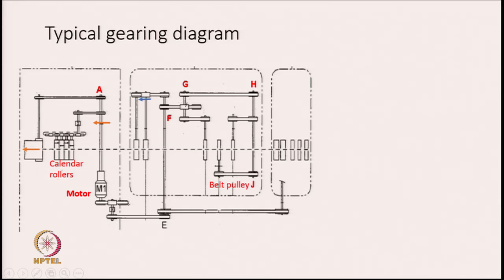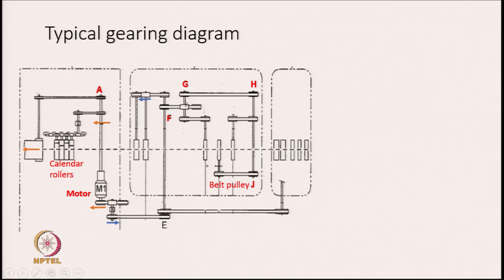From this side the motion is flowing. From here it goes there, going in this direction. As you see, from here the motion is distributed. By the time it goes to pulley F, part of it goes in the right-hand side direction, going to the front roller.